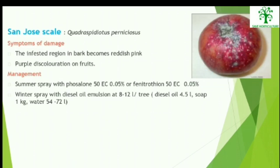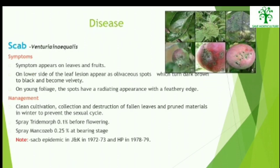San Jose Scale: The infested region in bark becomes reddish-pink in color and it also causes purple discoloration on the fruits. Management: summer spray with Phosalone 50 EC at 0.05% or Fenitrothion 50 EC at 0.05%. Winter spray with diesel oil emulsion at 8–12 litres per tree.